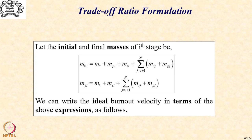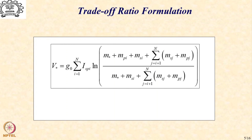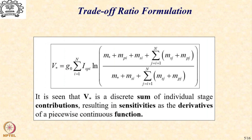We can write the ideal burnout velocity in terms of the above expressions as V* equals G₀ Σ(i=1 to n) Isp_i · ln(M0i/Mfi), where we open up the expressions for M0i and Mfi in terms of M*, MPi, and MSi. What we realize is that V* must be kept invariant while making changes to MSi, MPi, and M*. This is the primary objective of this exercise. However, this is not straightforward because V* is a discrete sum of individual stage contributions — it is a piecewise continuous function, not a continuous function.